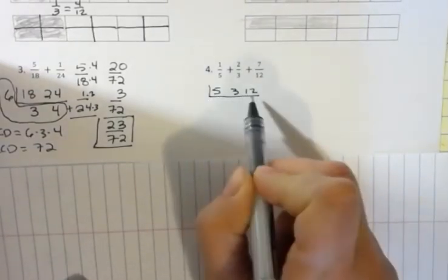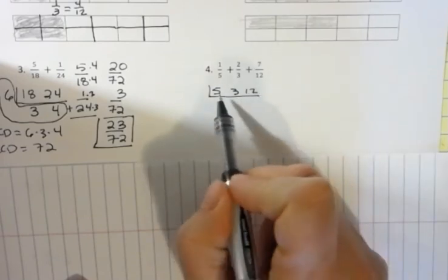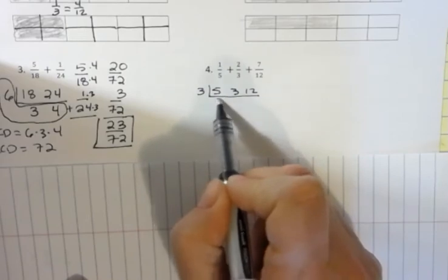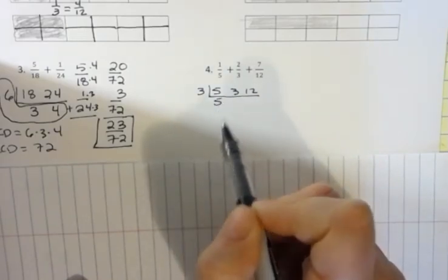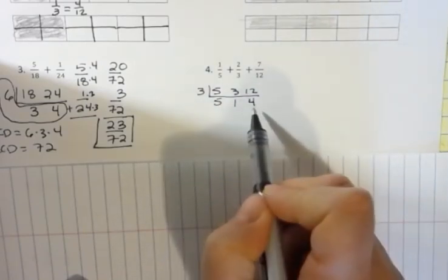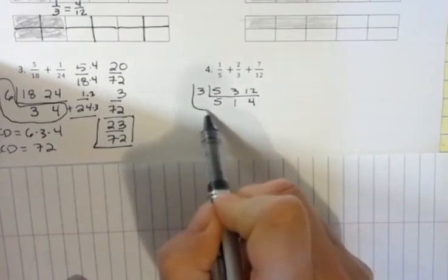Is there anything that goes into all 3 of these numbers? No. Anything that goes into 2? Yes. 3 goes. So, I'm going to take that 3 out. 5 comes down unchanged. 3 goes into 3 one time. And 3 goes into 12 four times. Nothing goes into these numbers aside from 1. So, I'm finished.